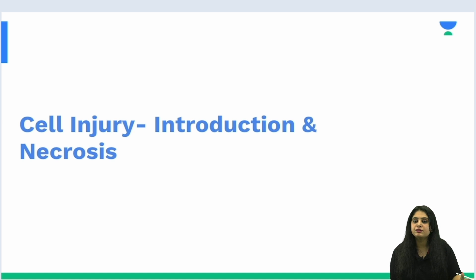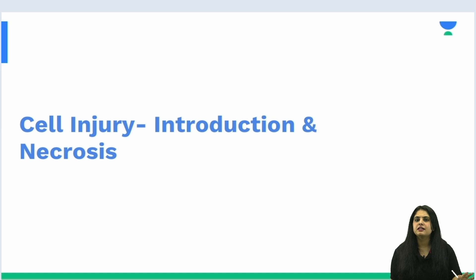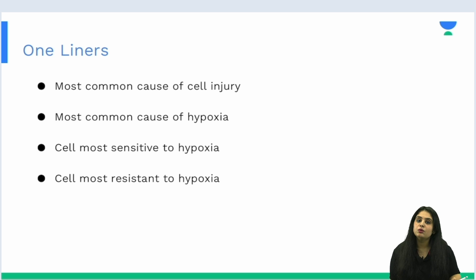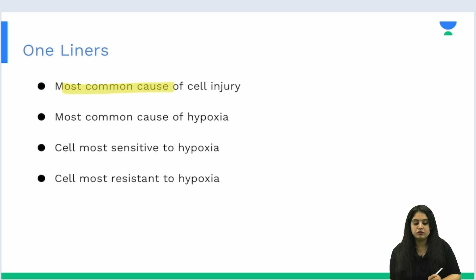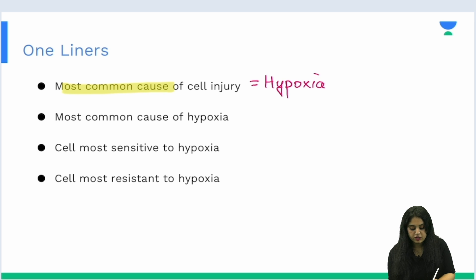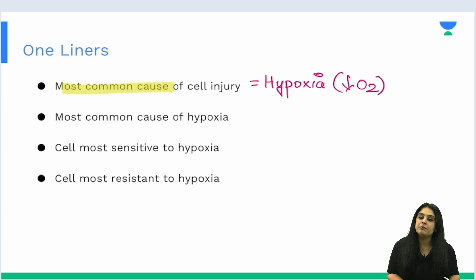Let's get ourselves introduced to the chapter, get a basic hang of it, and then we'll start with the different injuries and deaths. Let's start with some basics — easy one-liners to grasp. The first thing we need to know is: what is the cause of cell injury? Why does cell injury occur? The most common cause of cell injury is hypoxia, which basically means that the oxygen concentration has gone down.